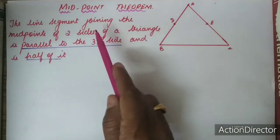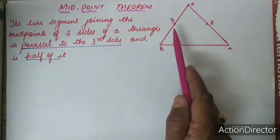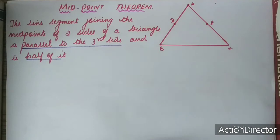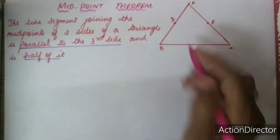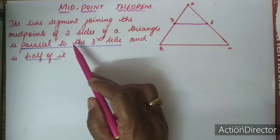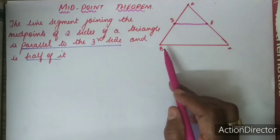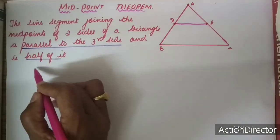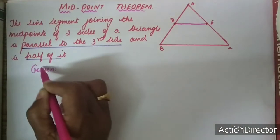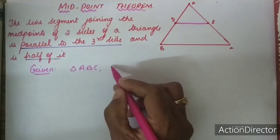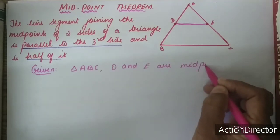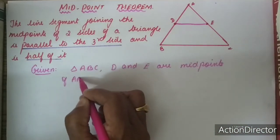A triangle ABC is given and there is a line segment joining the midpoints of the two sides of a triangle. That is, we have taken D as the midpoint of AB and E as the midpoint of AC. We have to prove that line segment DE is parallel to BC, the third side of the triangle. Given: triangle ABC where D and E are midpoints of AB and AC respectively.